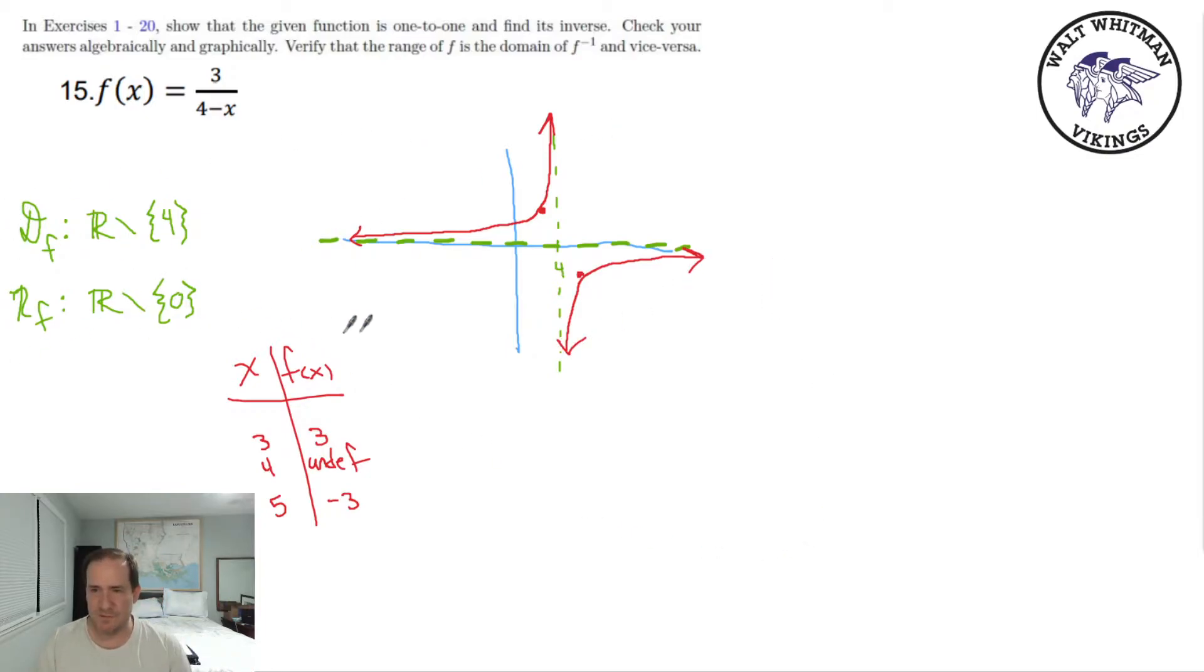So my domain is good, my range is good, my graph is good. Now that I've got a graph to look at, I think it's safe to say that yes, f of x is 1 to 1 already, so its inverse will be a function. So there's no need to restrict this domain any further, because we're already 1 to 1, because we passed that horizontal line test.